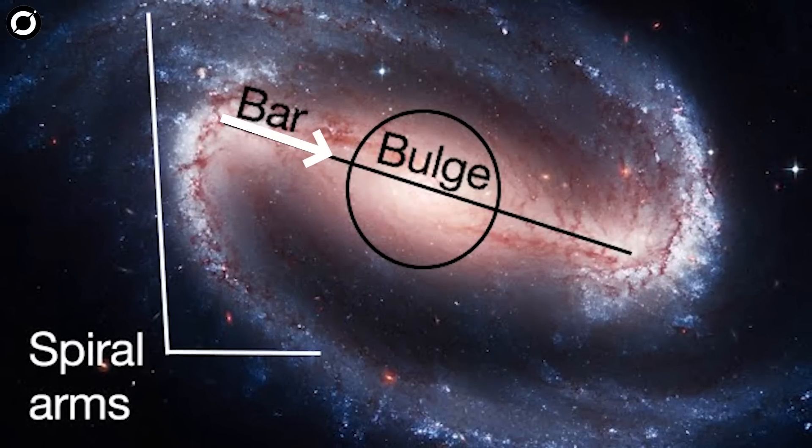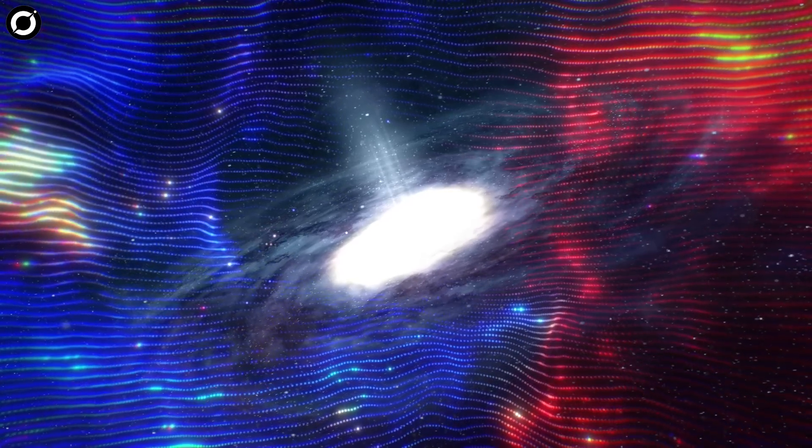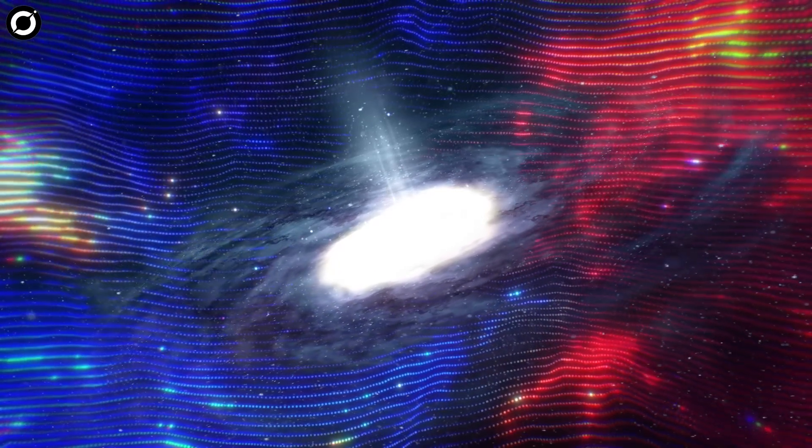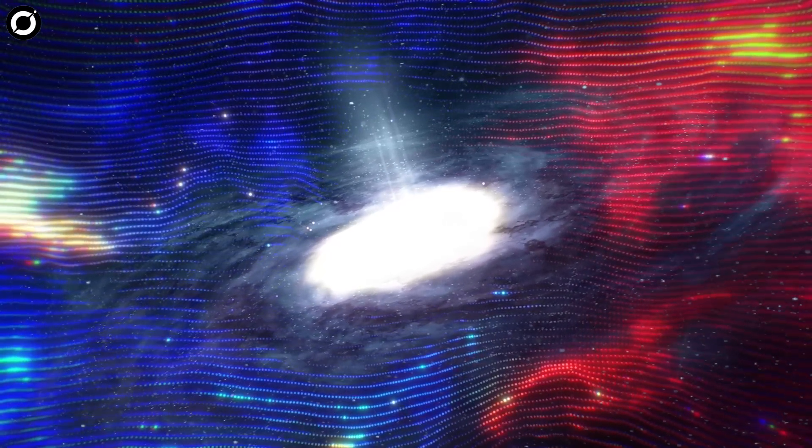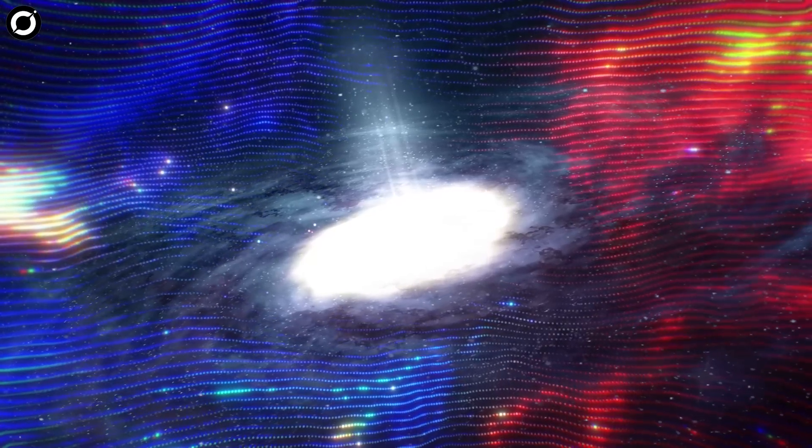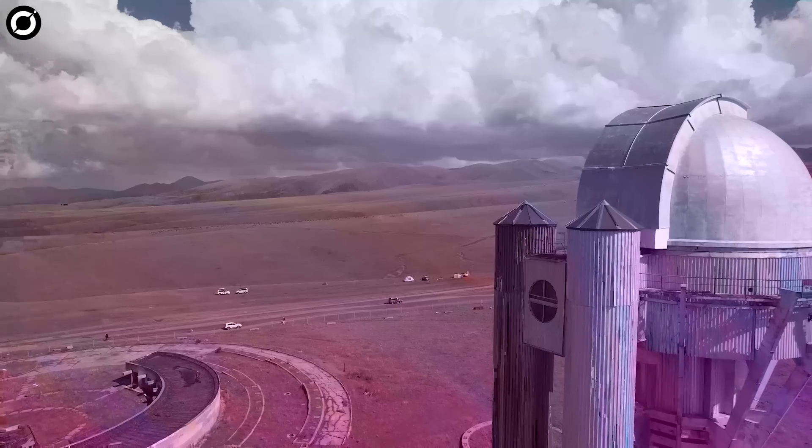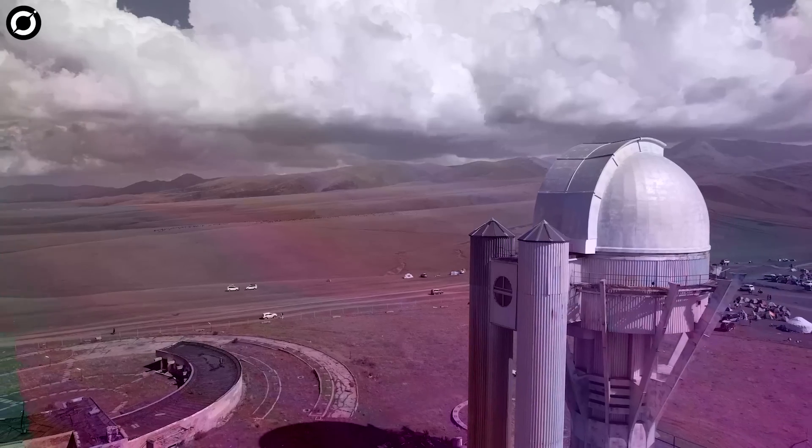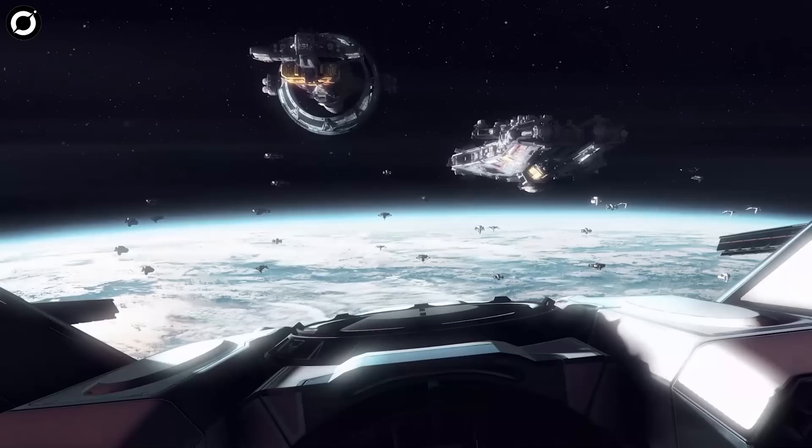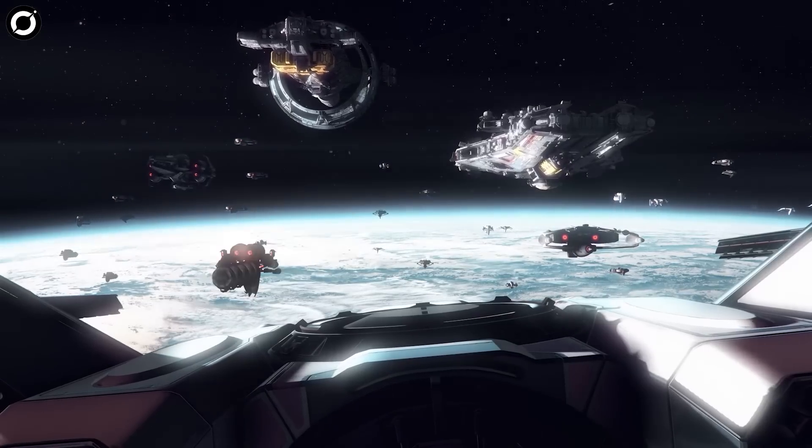Scientists have been able to use different wavelengths to peer through this zone of avoidance, a region that obscures 10 to 20 percent of the sky. But despite their best efforts and use of advanced tech, most of this region still remains out of our view. If an alien colony had to hide in our galaxy, perhaps this blind spot would be the best place.